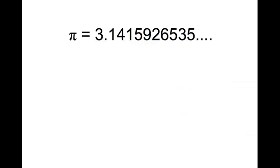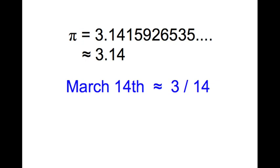The decimal representation for PI is infinitely long, but we can take an approximation for that number, and just look at the first two decimal digits, and we get 3.14. The date March 14th can also be written as 3.14, and that's why we call that day PI Day.